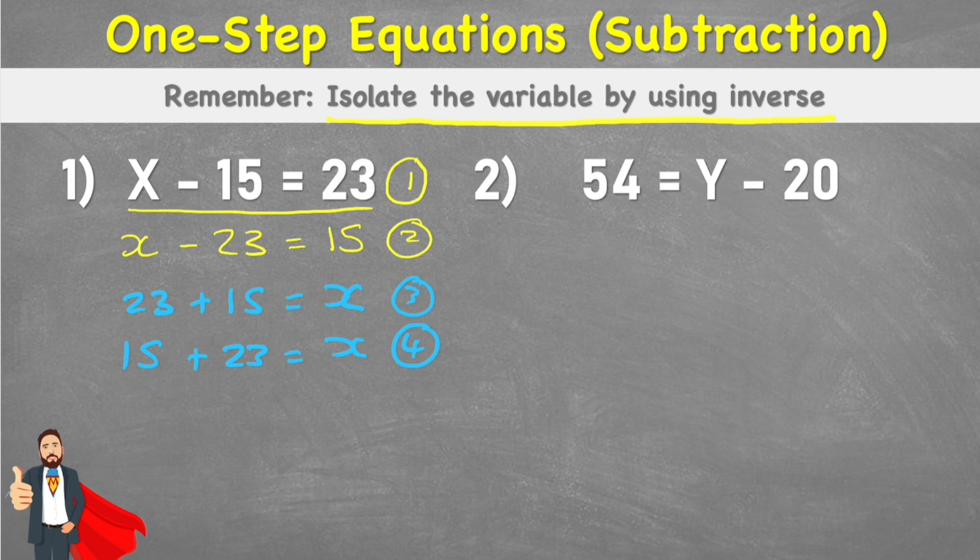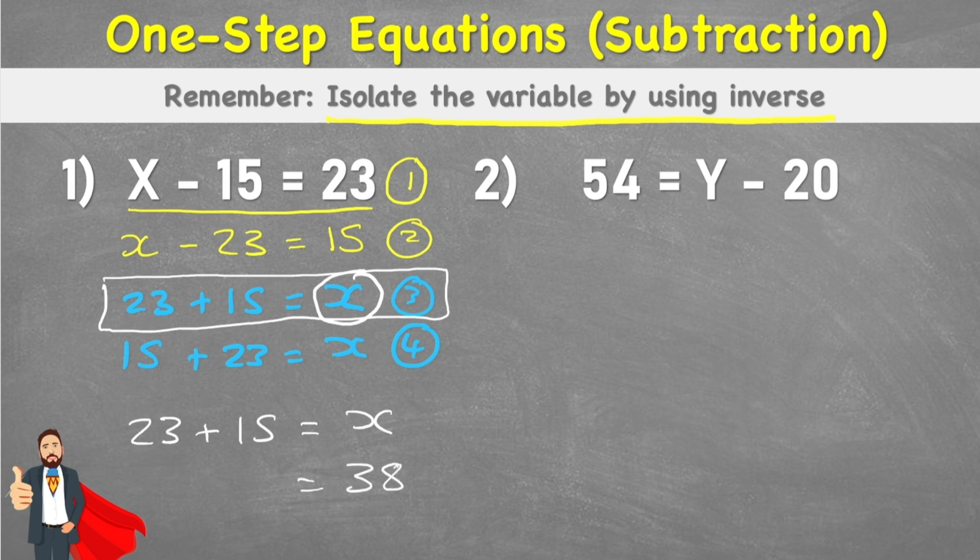So what we can do is we can look now at one of these and we can find the inverse. We can actually look at either of these two addition. So I'm going to look at this one here. And we're going to solve it because the x is now on its own. So I can do 23 plus 15 equals x. And therefore, 23 plus 15 equals 38. And therefore, x equals 38.